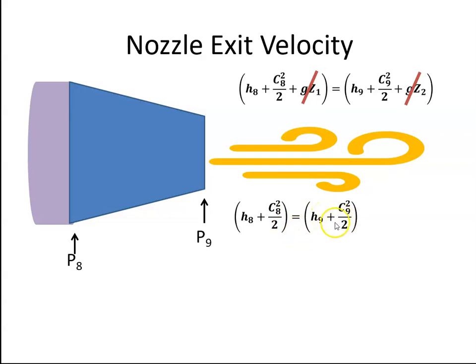And now I'm just going to rearrange the equation, keeping C9 to one side. So the velocity C9 to one side. So I multiply both sides by 2 and then just rearrange. And that's what I get. And the change in enthalpy is Cp times the change in temperatures.